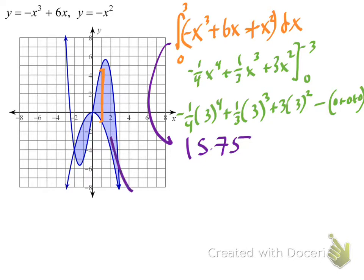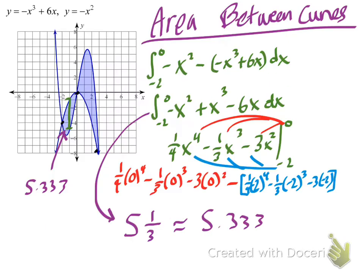So this second region is 15.75 square units. The earlier region was 5 and ⅓.